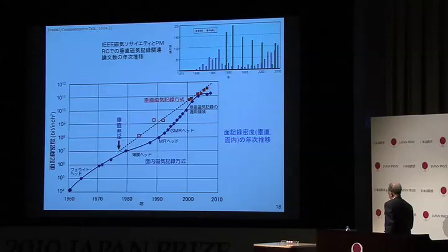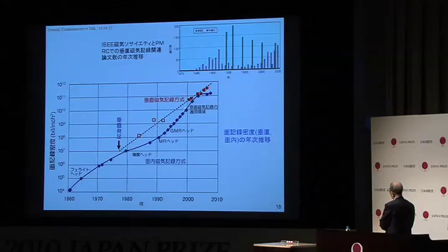Around this era, claims arose that improving the read head would allow longitudinal recording to continue indefinitely — and therefore perpendicular recording was unnecessary. This was the era of 'valley of death' for perpendicular recording, which had launched in 1977. Nevertheless, I steadily continued experiments. Extrapolating from predictions I made in 1984, around the year 2000, re-evaluation of perpendicular recording began as longitudinal recording approached its limits. Many started sensing a barrier approaching.